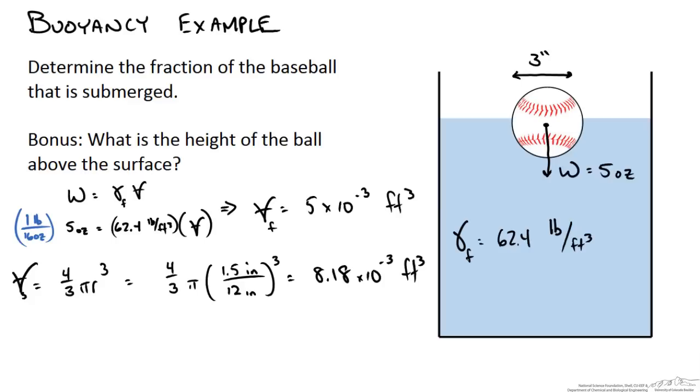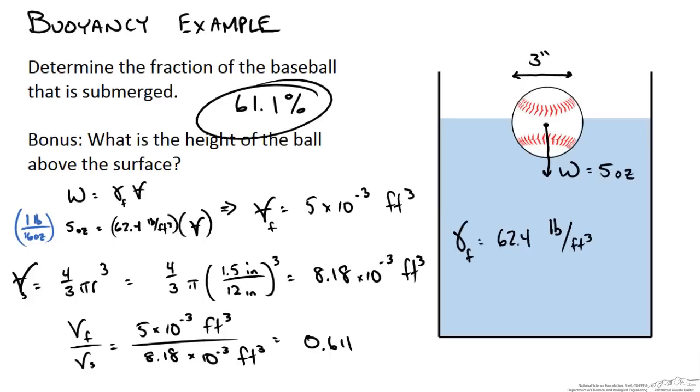So now we take the ratio of what is displaced over the actual volume, and we get 0.611 or 61.1% of our baseball that is submerged.